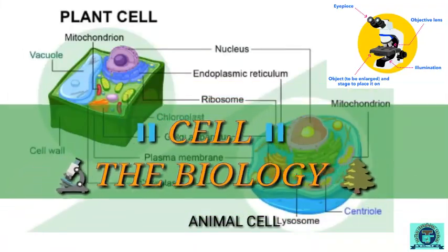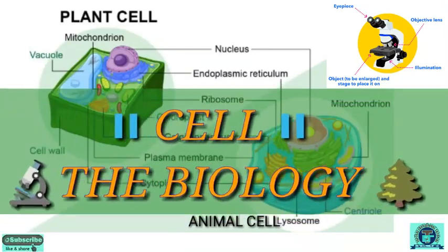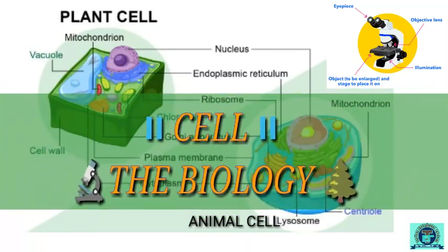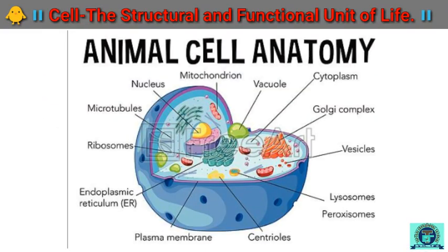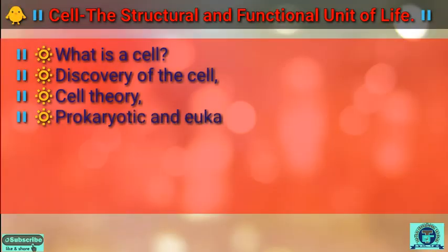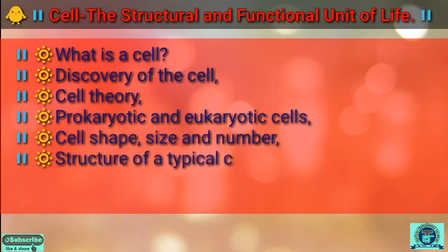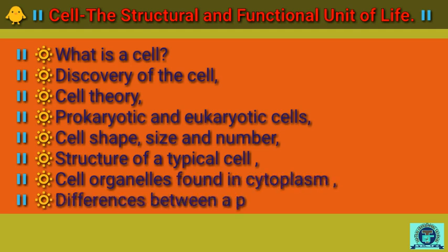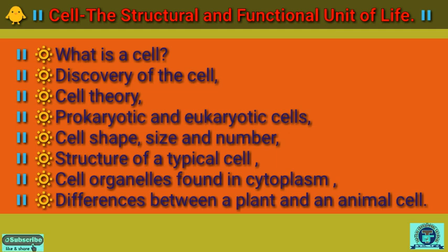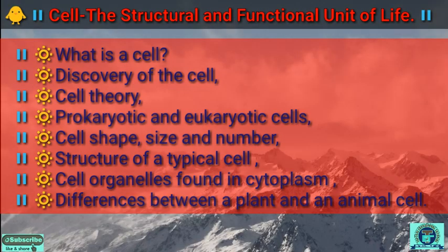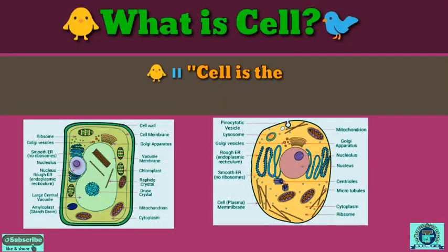Hello dear students, here we bring the new biology session. In this chapter, students will be able to learn: what is a cell, discovery of the cell, cell theory, prokaryotic and eukaryotic cells, cell shape and number, structure of a typical cell, cell organelles found in the cytoplasm, the difference between plant and animal cells, and an overview of the cell.